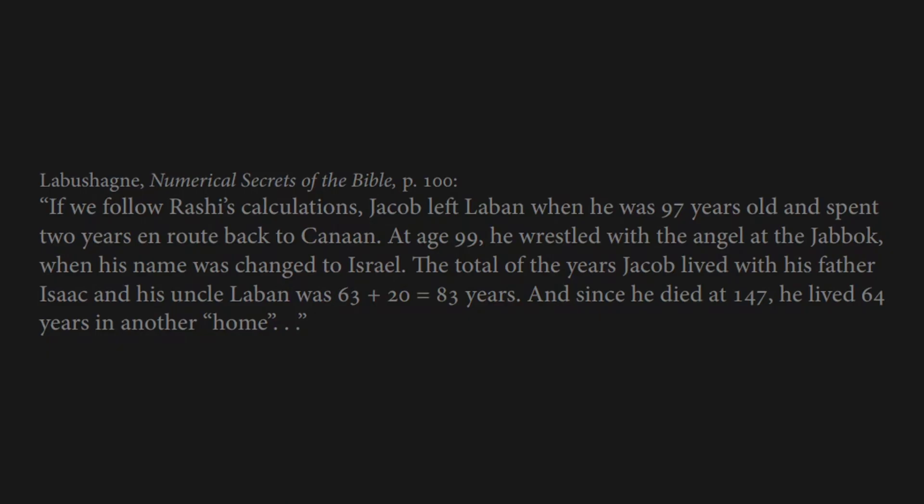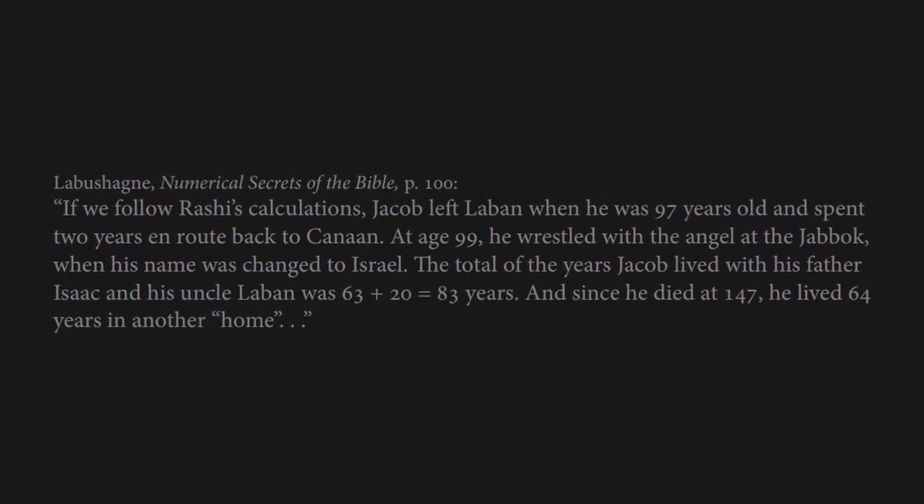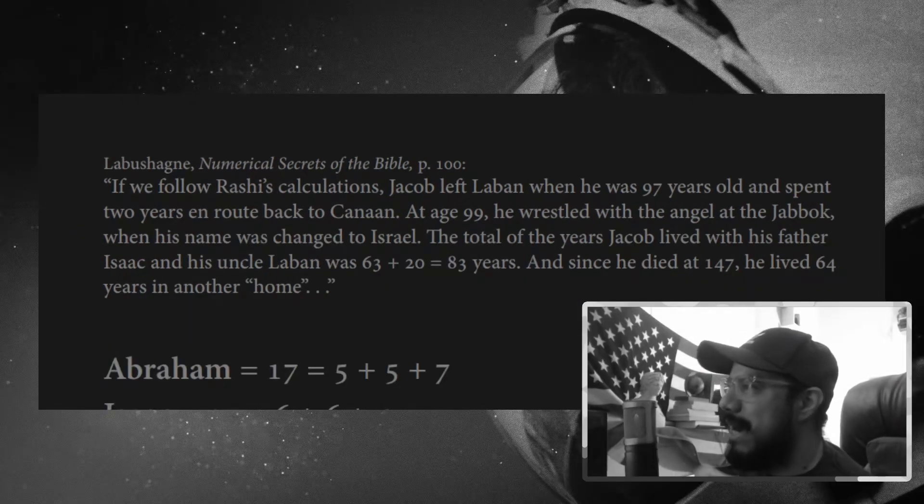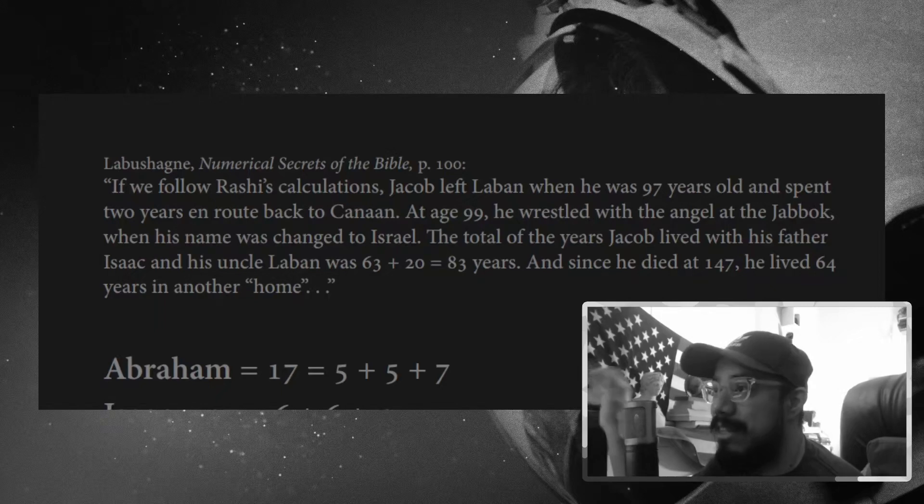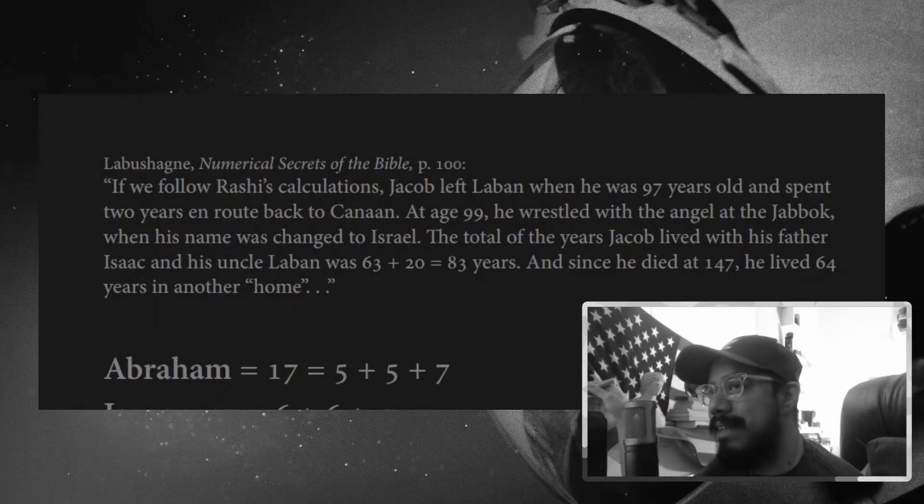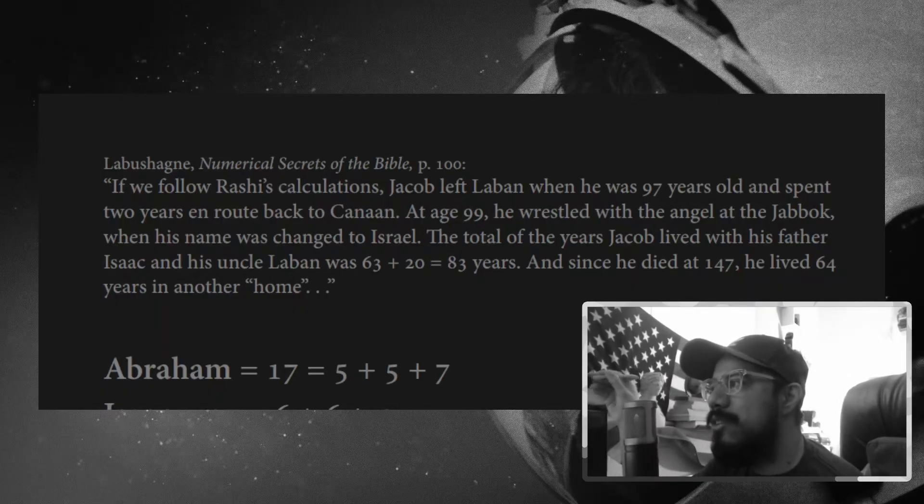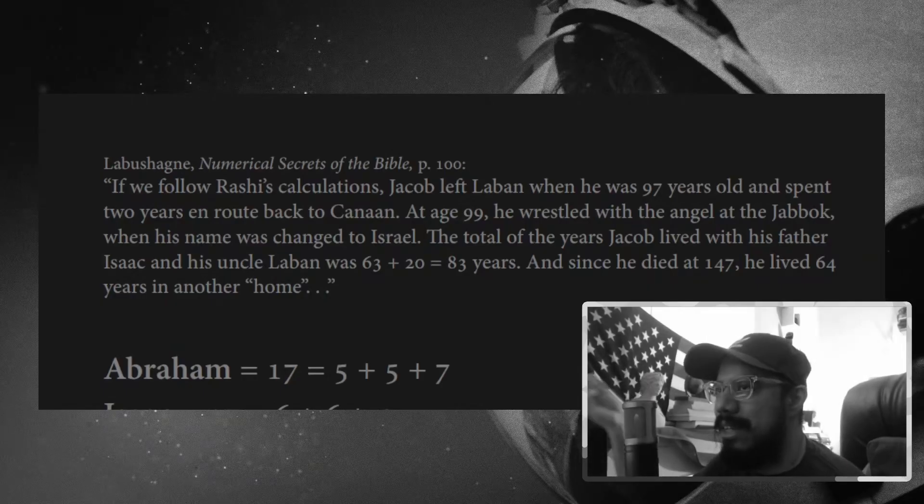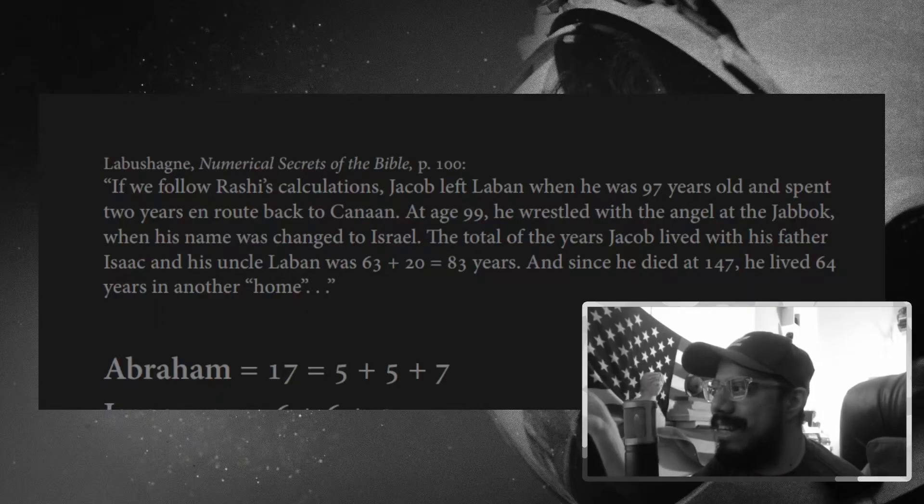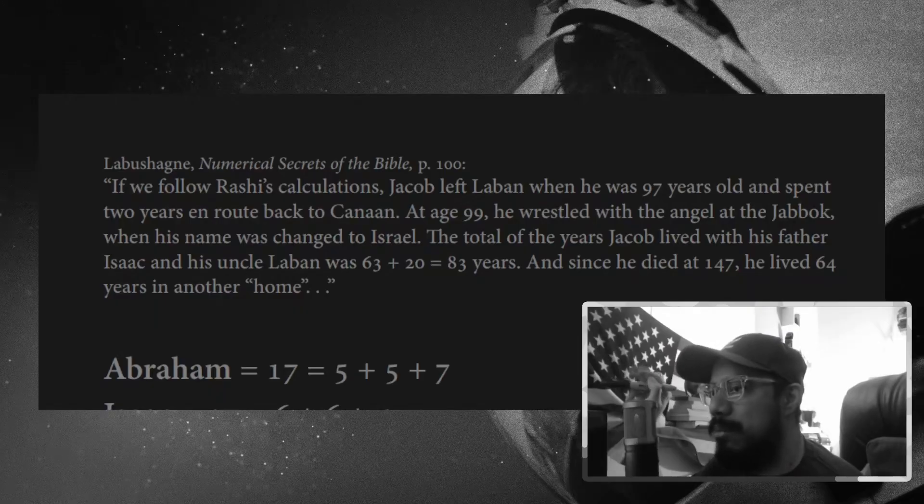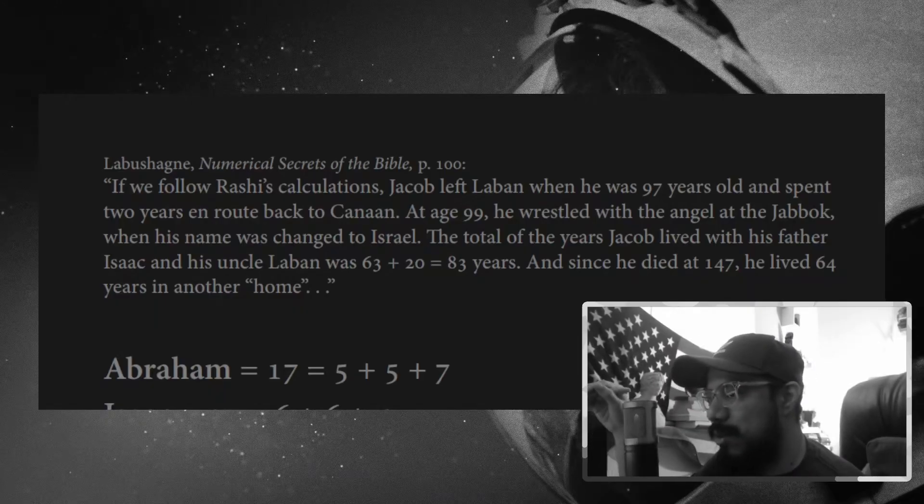But further down, Christensen was interacting with Rashi, the rabbi. And he gets into this deep, complicated thing about the biography of Jacob. And this is just the conclusion here at the end. Jacob left Laban when he was 97 years old and spent two years en route back to Canaan. At 99, he wrestled with the angel. His name was changed to Israel. The total of the years Jacob lived with his father, Isaac, and his uncle Laban was 63 plus 20 equals 83 years. And since he died at 147, he lived 64 years in another home. So that could be also where the 64 plays in.